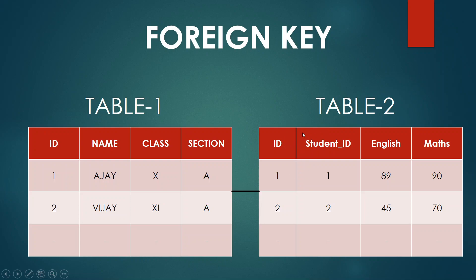When generating a report card, the system opens the report table, picks the first record, and reads the foreign key — for example, student ID 1. Using that reference, it accesses the student table where ID 1 matches, and picks the name, class, and section from the student table. The marks are taken from the report table itself.